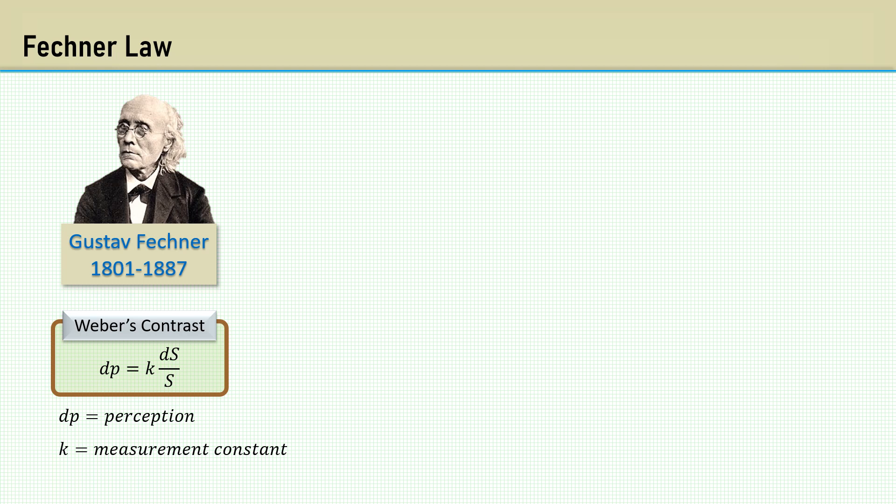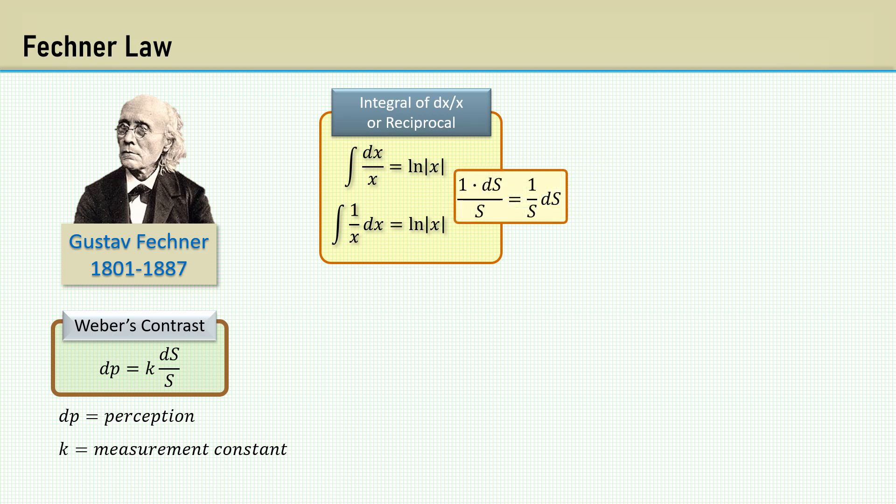Fechner derived his law from the Weber contrast. Let's go ahead and derive it by integrating Weber's contrast. We can see it's in the form of dx over x, which is the same as 1 over x. The integral is the natural log of the absolute value of x. Integrating gives us P equals K times the natural log of S plus the constant of integration, C.